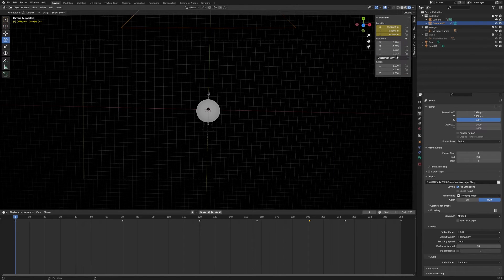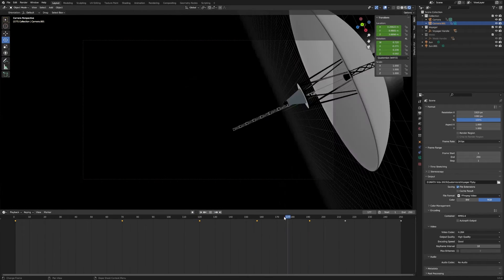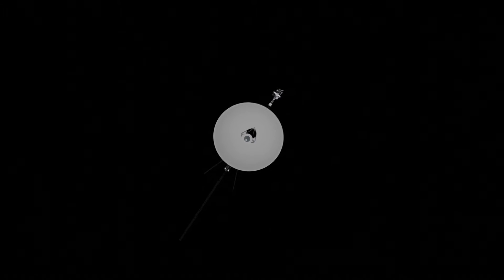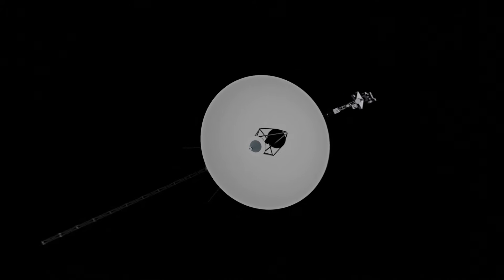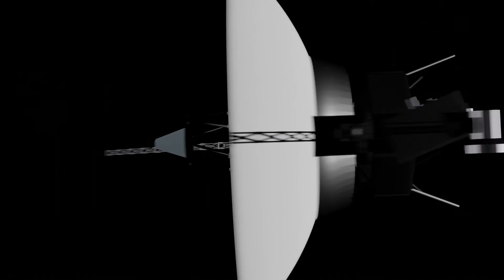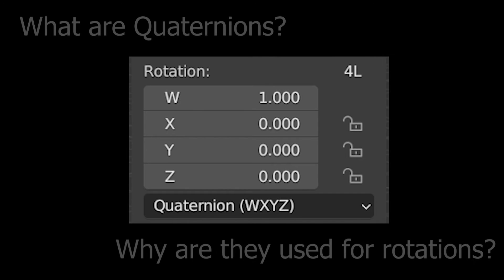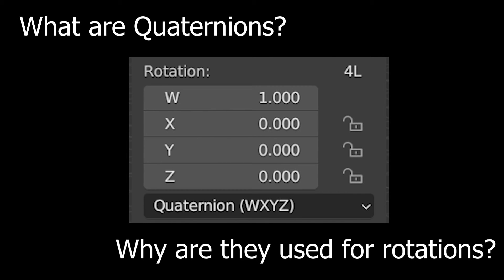Then I redid the keyframes for each of the orientations that I wanted to land on. And it worked. Did exactly what I wanted. Just rotating from one orientation to another. So this got me wondering, what are quaternions? And why are they so good for doing rotations? And that's exactly what we're going to explore in this video.